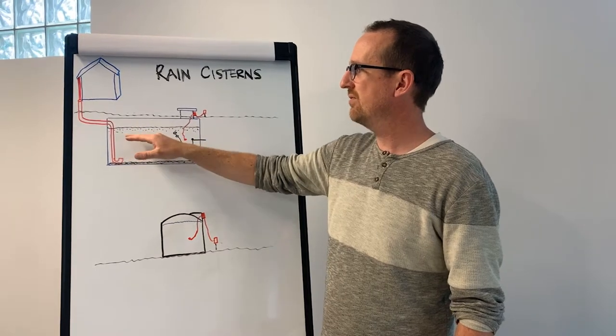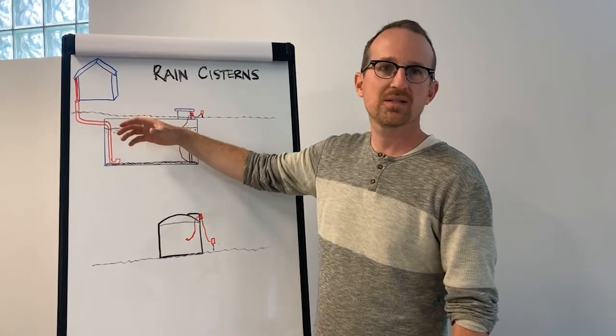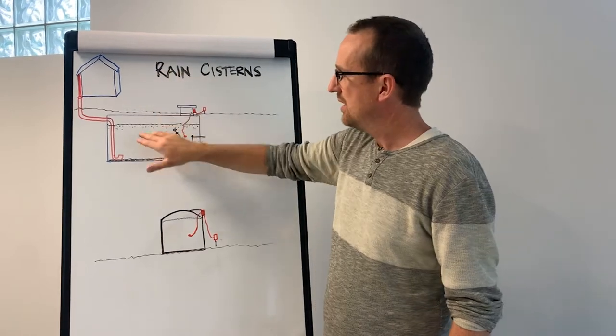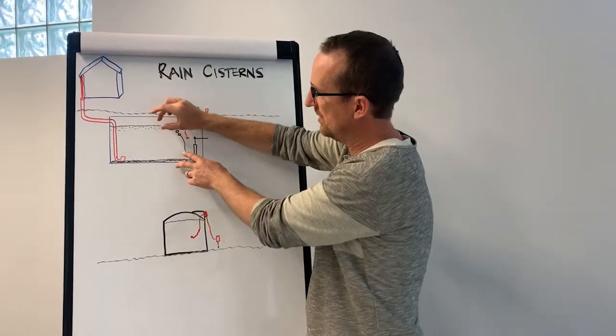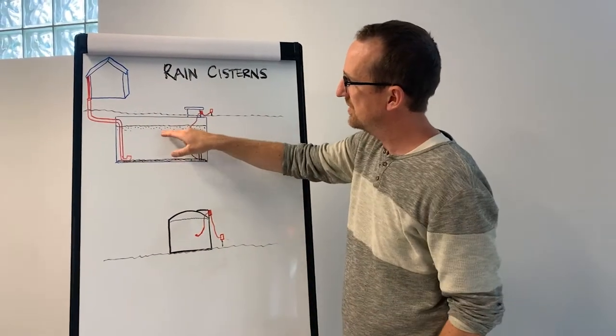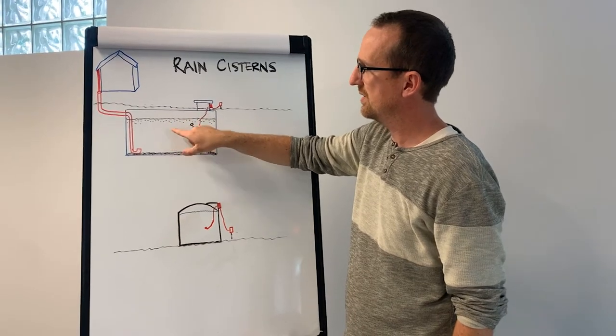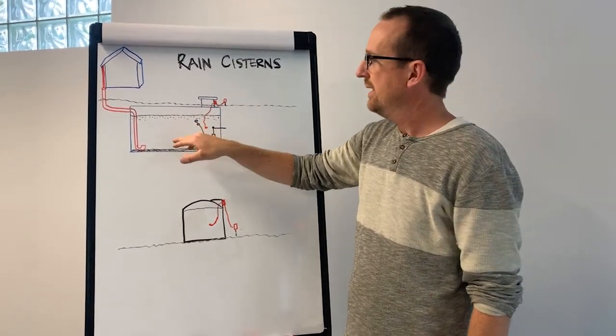At the top, we have a zone where sediment that is lighter than water floats. So these are going to be two separate zones in the cistern, and between these two zones, it's going to be pretty clear water.